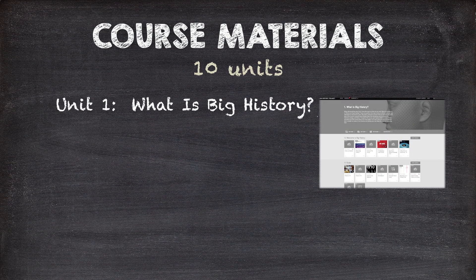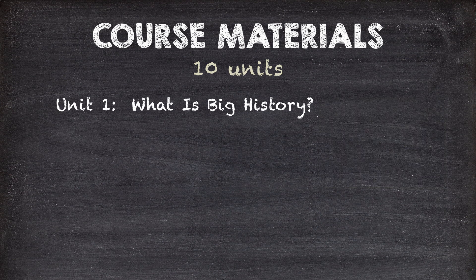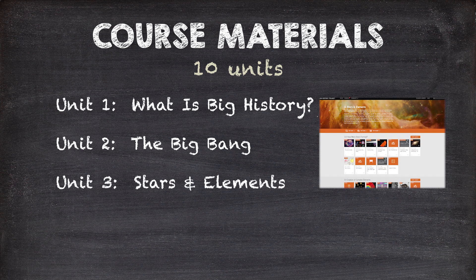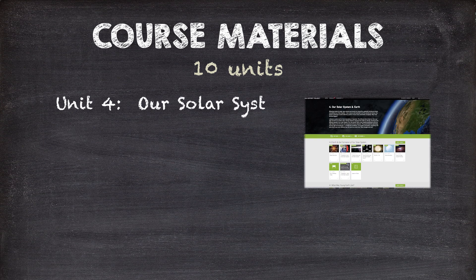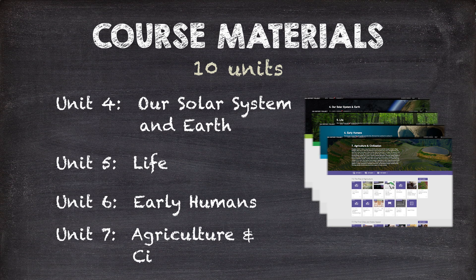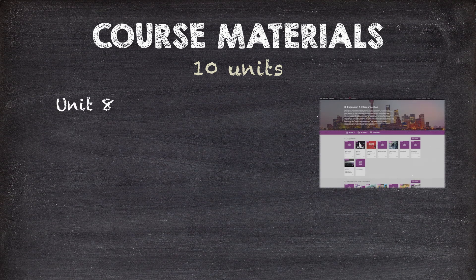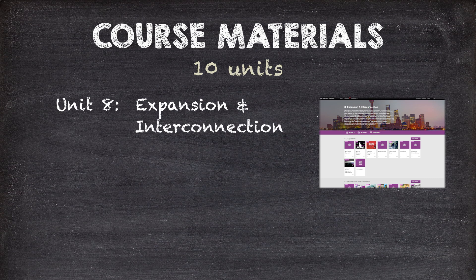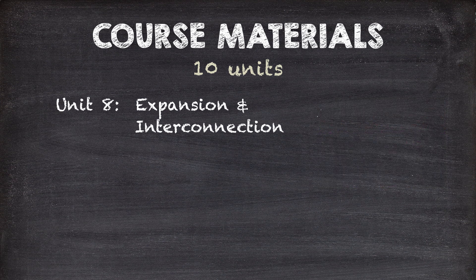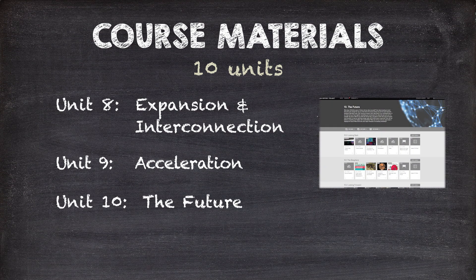Unit 1 is an introduction to the course — it establishes the outline and explores the notion of origin stories. Unit 2 looks at the Big Bang. Unit 3 deals with the first stars and chemical elements, combining thresholds 2 and 3. Units 4, 5, 6, and 7 move through the next four thresholds neatly. Then in Unit 8, we talk about what David Christian calls the unification of the four world zones. Although this isn't a threshold, it's a critical part of the Big History narrative. Unit 9 looks at the modern revolution, and Unit 10 ends the course with a look at the future.